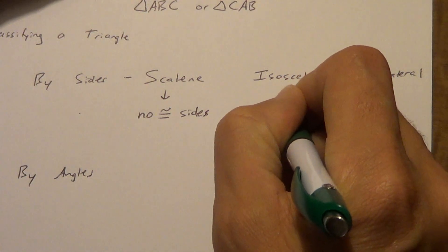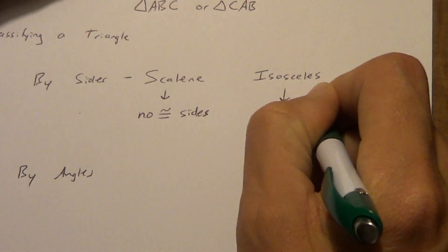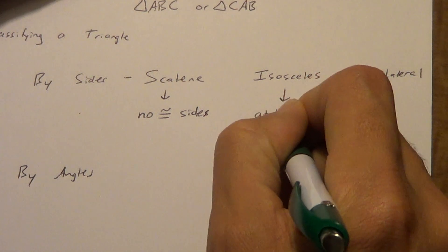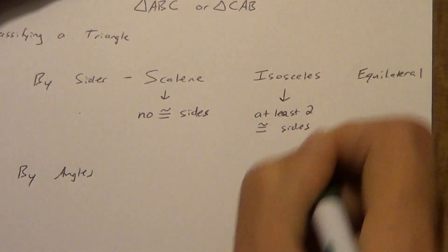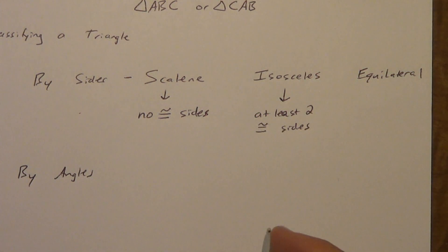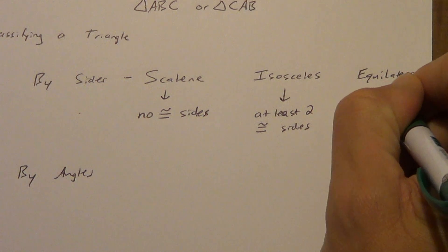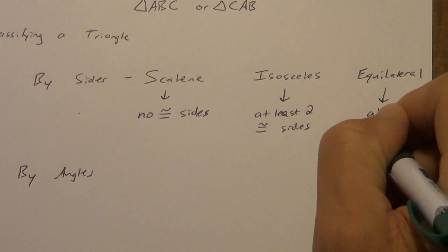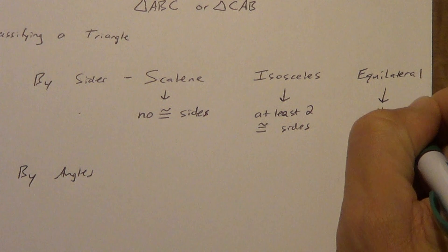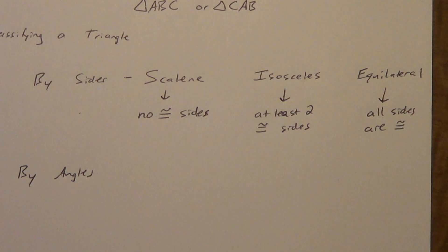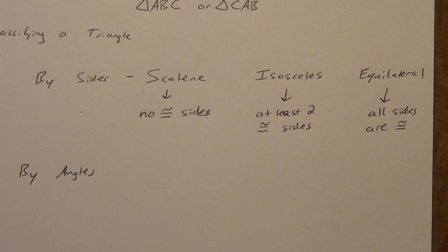Isosceles has at least two congruent sides. Okay, which means it could have three. It's a possibility, but usually we just talk about having two. And then equilateral is all sides are congruent. Now in a triangle, that means all three sides. But in a quadrilateral, we could have an equilateral quadrilateral, and it would have all four sides congruent and so on.